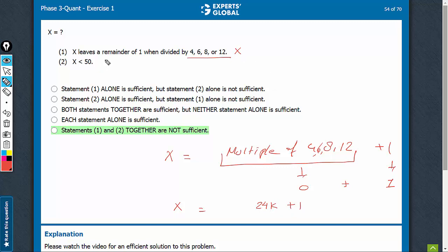Statement 2 alone is of course not sufficient, that is too little information. Even on combining, x could be 24 plus 1, as in 25, or it could be 24 into 2 plus 1, 49 also. So even on combining, two values are possible. A unique value is still not there.